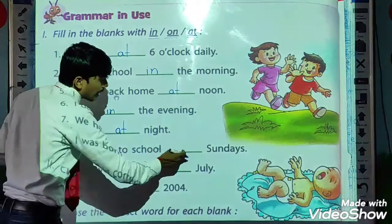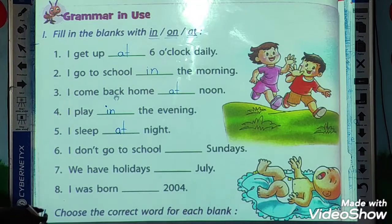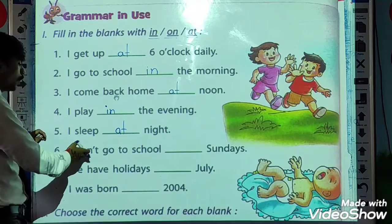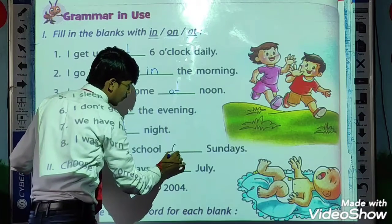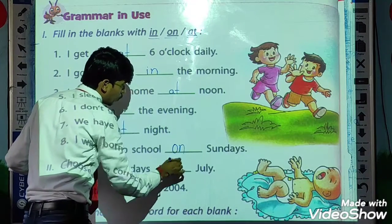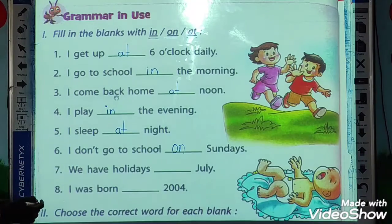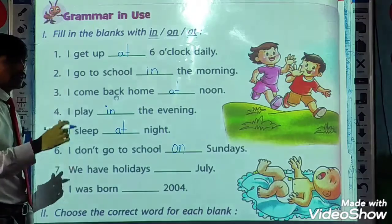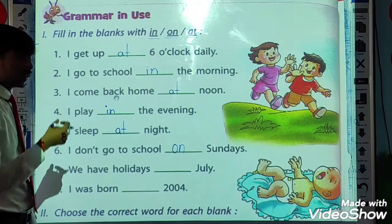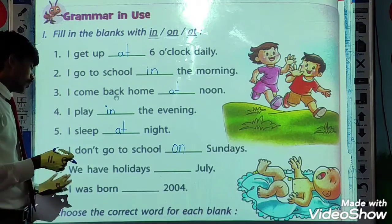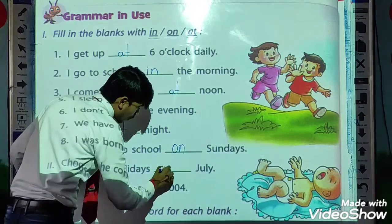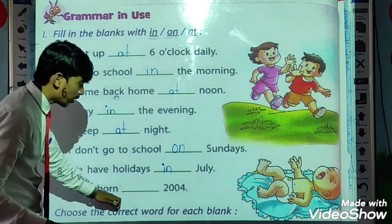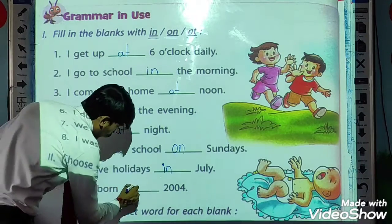Next: I don't go to school dash Sundays. So I don't go to school on Sundays. We have holidays dash July. It is about the month of the year, so we have holidays in July. I was born on Sunday — I was born on Sunday.